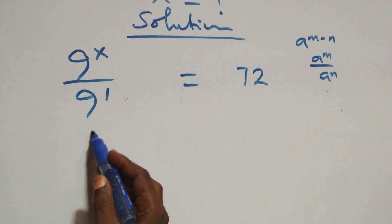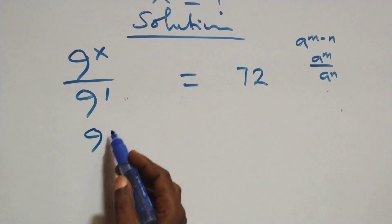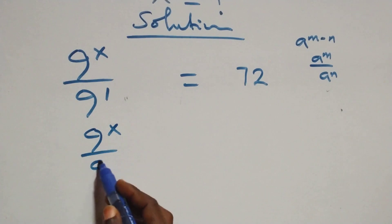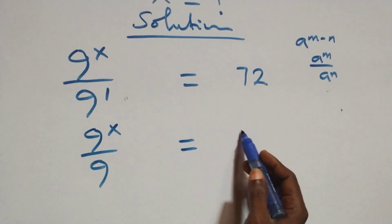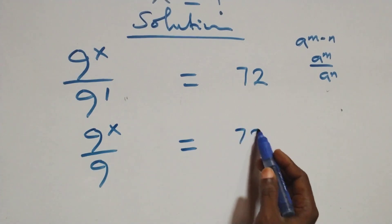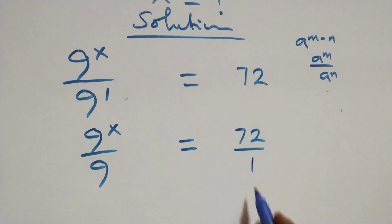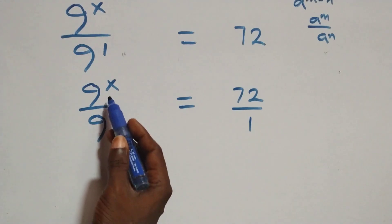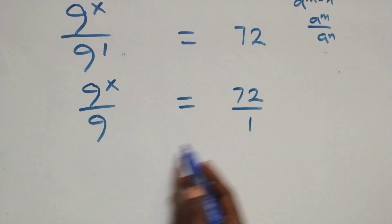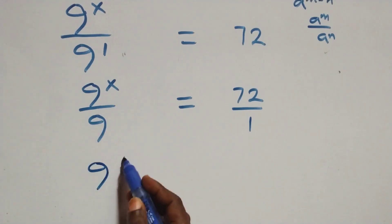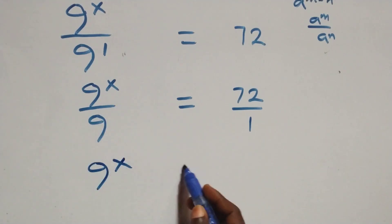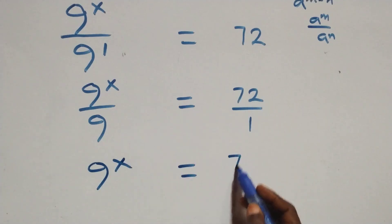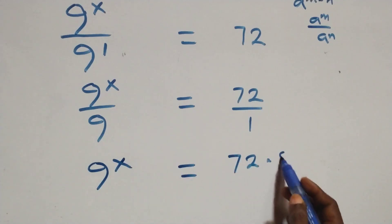This is the same thing as 9 raised to power x over 9 raised to power 1 — that is 9 — equals 72 over 1. Then we cross multiply: 9 raised to power x times 1 is the same as 9 raised to power x, which equals 72 times 9.